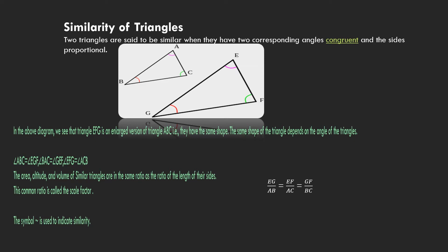What are the equal angles here? Angle ABC — that means angle B — is equal to angle EGF, that means angle G. And angle BAC — that means angle A — is equal to angle E. So these two pairs of angles are equal, and therefore angle C and angle F will also be equal. The corresponding angles of the two triangles are equal. The area, altitude, and volume of similar triangles are in the same ratio as the ratio of the lengths of their sides.